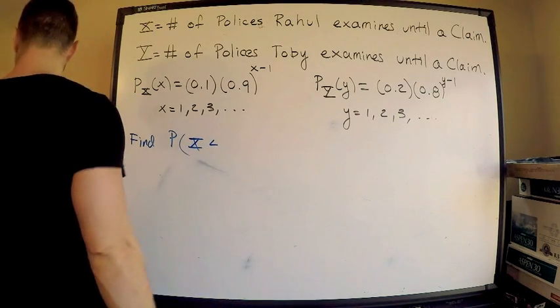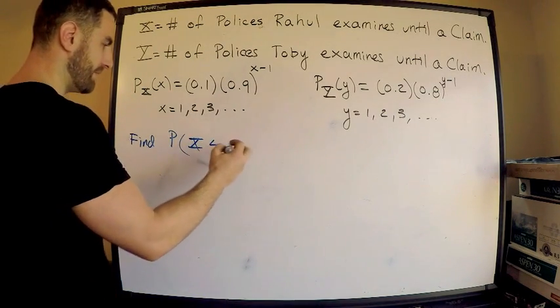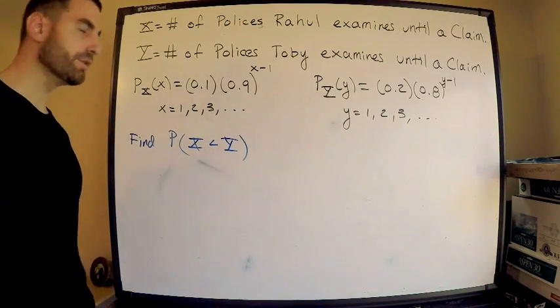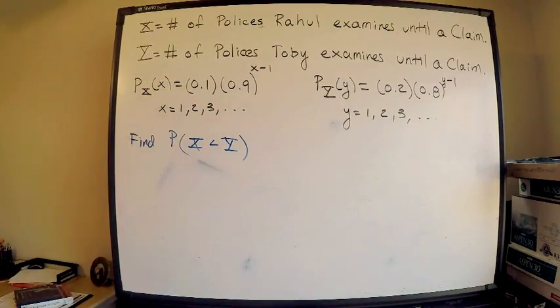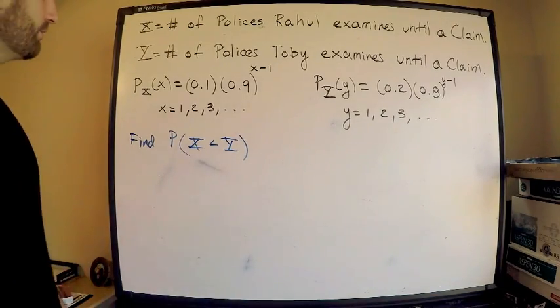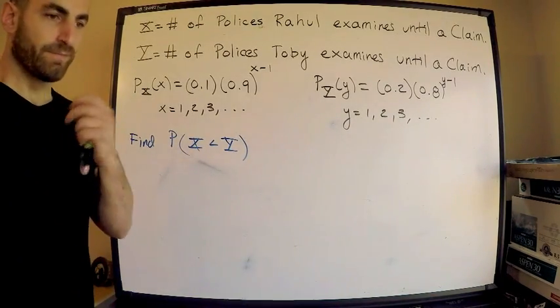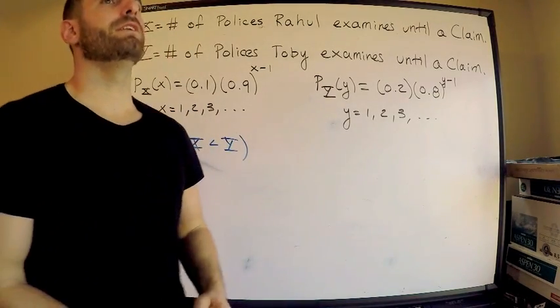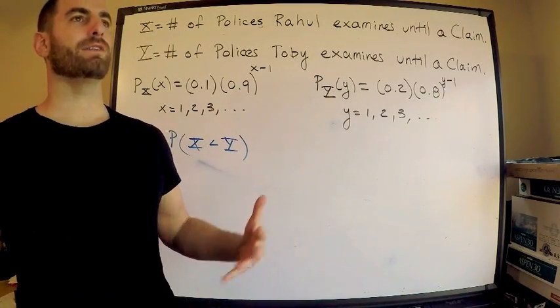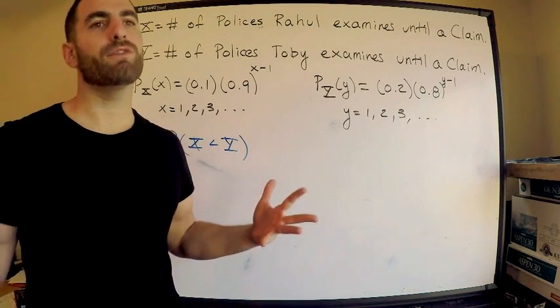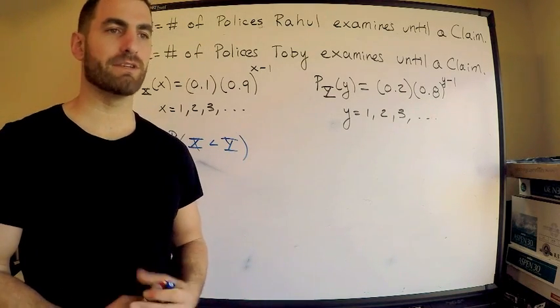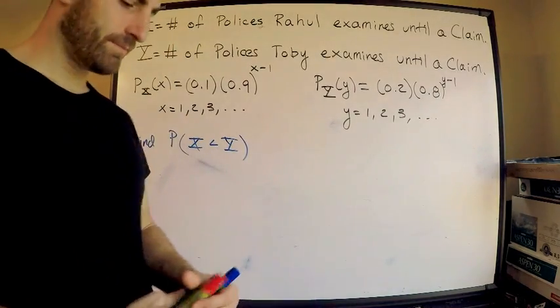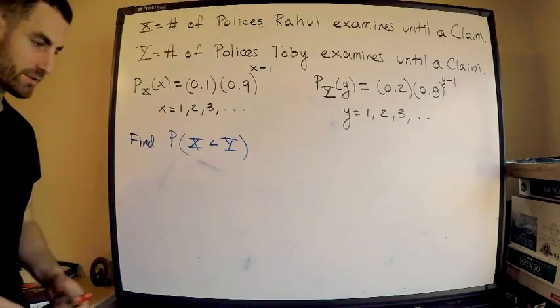This tells me to write down specifically this statement: we want to find the probability that the number of policies examined by Raul, which is X, is less than the number of policies examined by the other guy, which is Toby, Y. Fewer, so strict inequality. This is what we need to find. You can see some sort of convolution method here, which is what I believe they do. I actually never really do it, to be honest. I never do it. I don't think it's necessary. I just think about things intuitively.